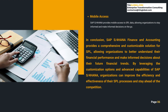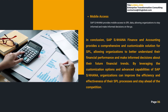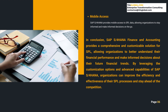15. Mobile Access: SAP S4 HANA provides mobile access to SPL data, allowing organizations to stay informed and make informed decisions on the go. This allows for greater flexibility in financial reporting and analysis, as well as better tracking of financial performance across different business areas. Key personas include finance managers and analysts. IT customization details include configuring custom mobile access options, defining custom fields, and configuring custom validation rules.